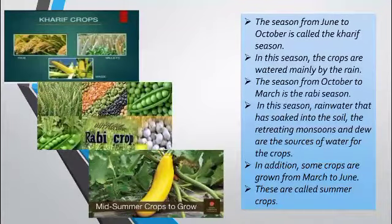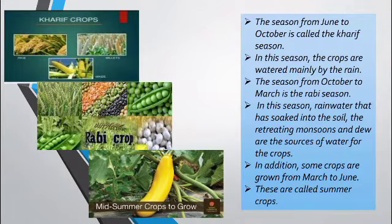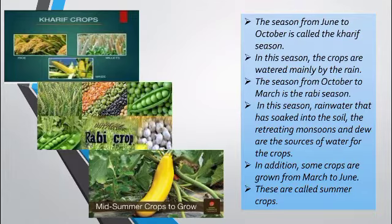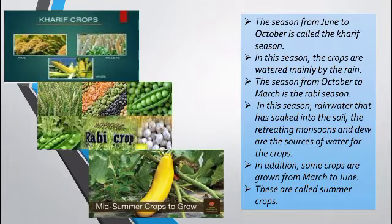As per the season, crops are grown. The first one is Kharif crops, from June to October. These crops get water from the rain automatically. The next crop is Rabi crops, from October to March. In this season, rain water has already soaked into the soil and it helps the crops to grow. In addition, some crops are grown in summer also, called summer crops, from March to June. So ultimately we have three types: Kharif crops, Rabi crops, and summer crops. These crops are grown as per the season and stored for a longer period or throughout the year.